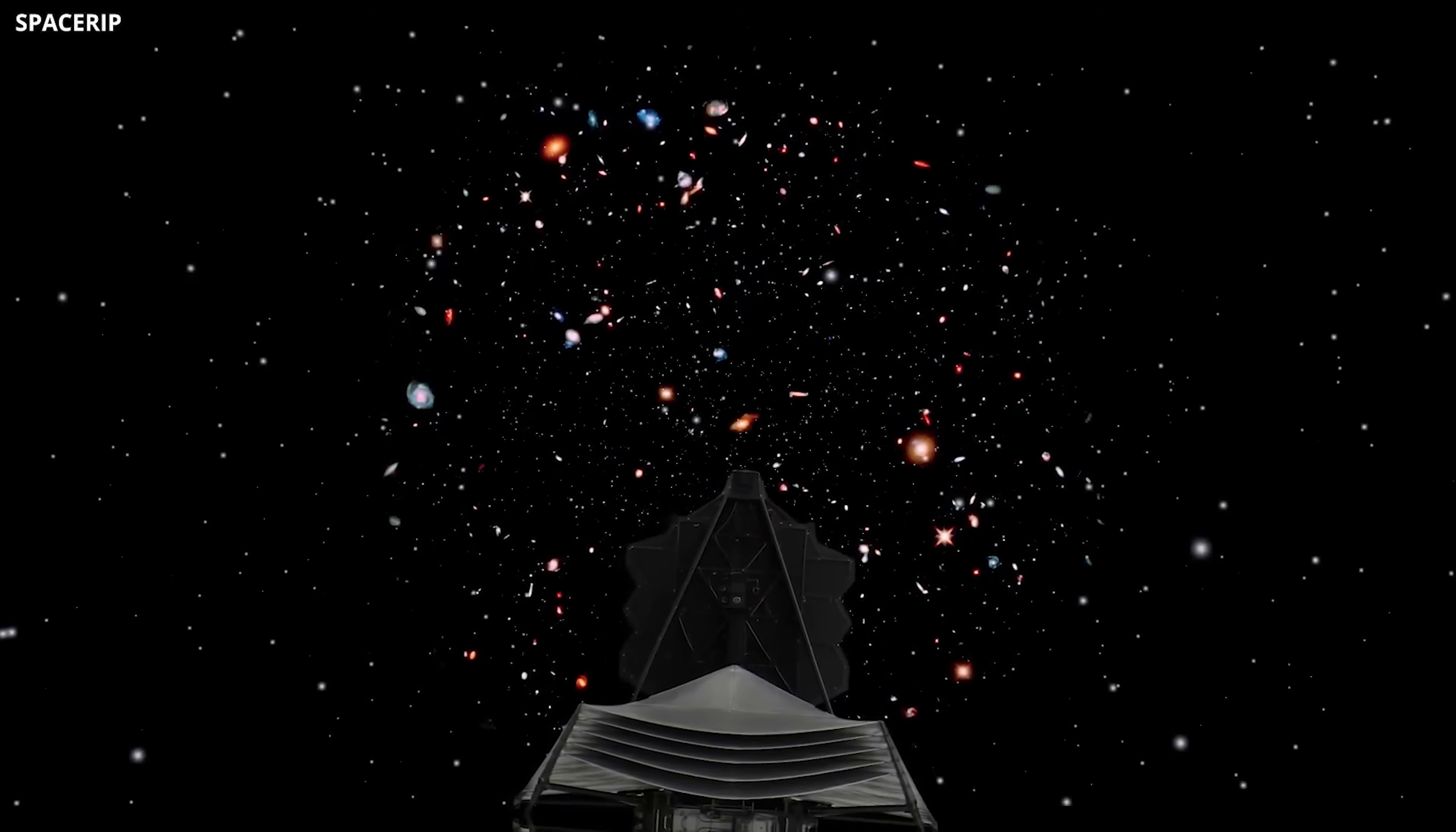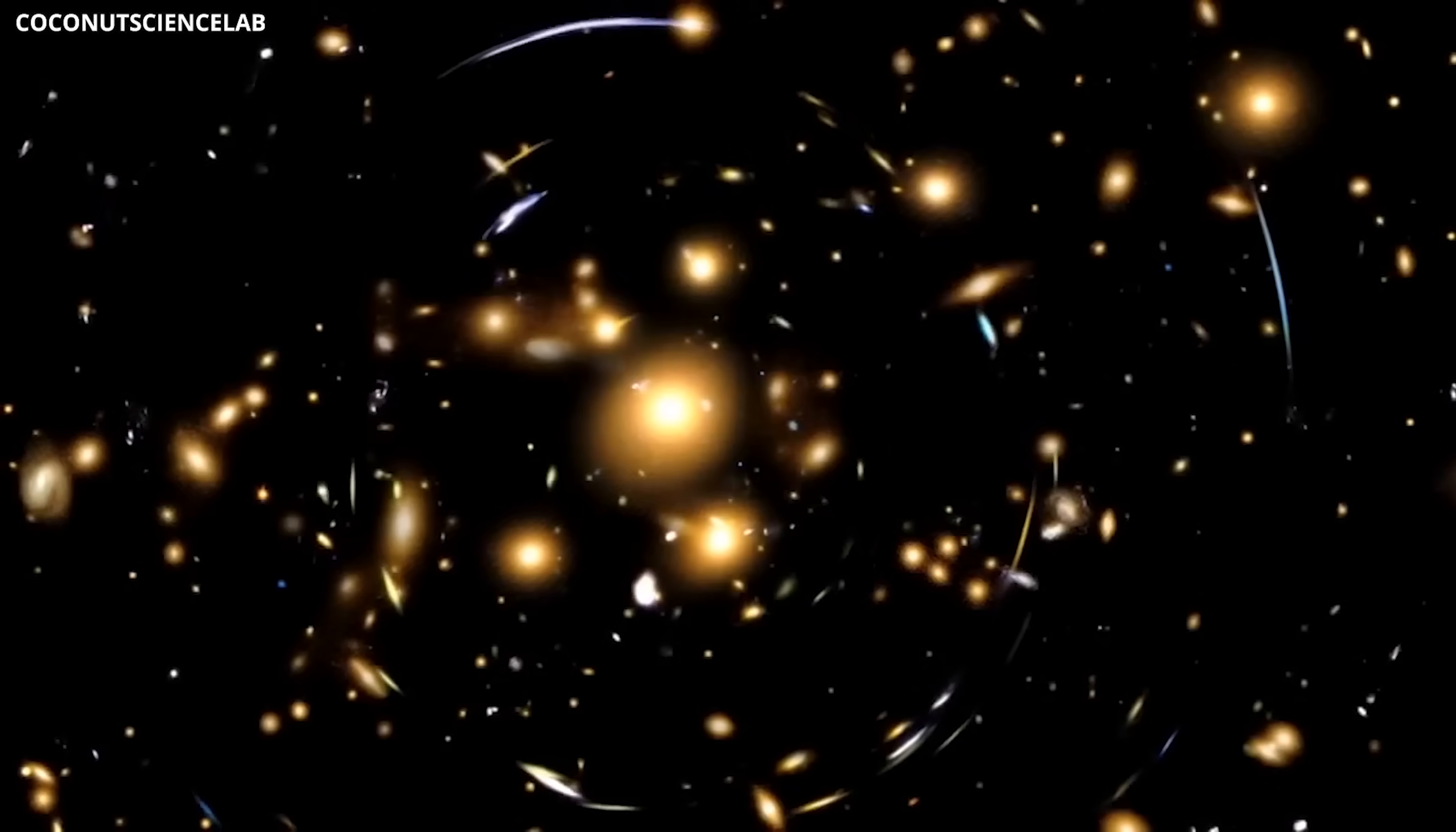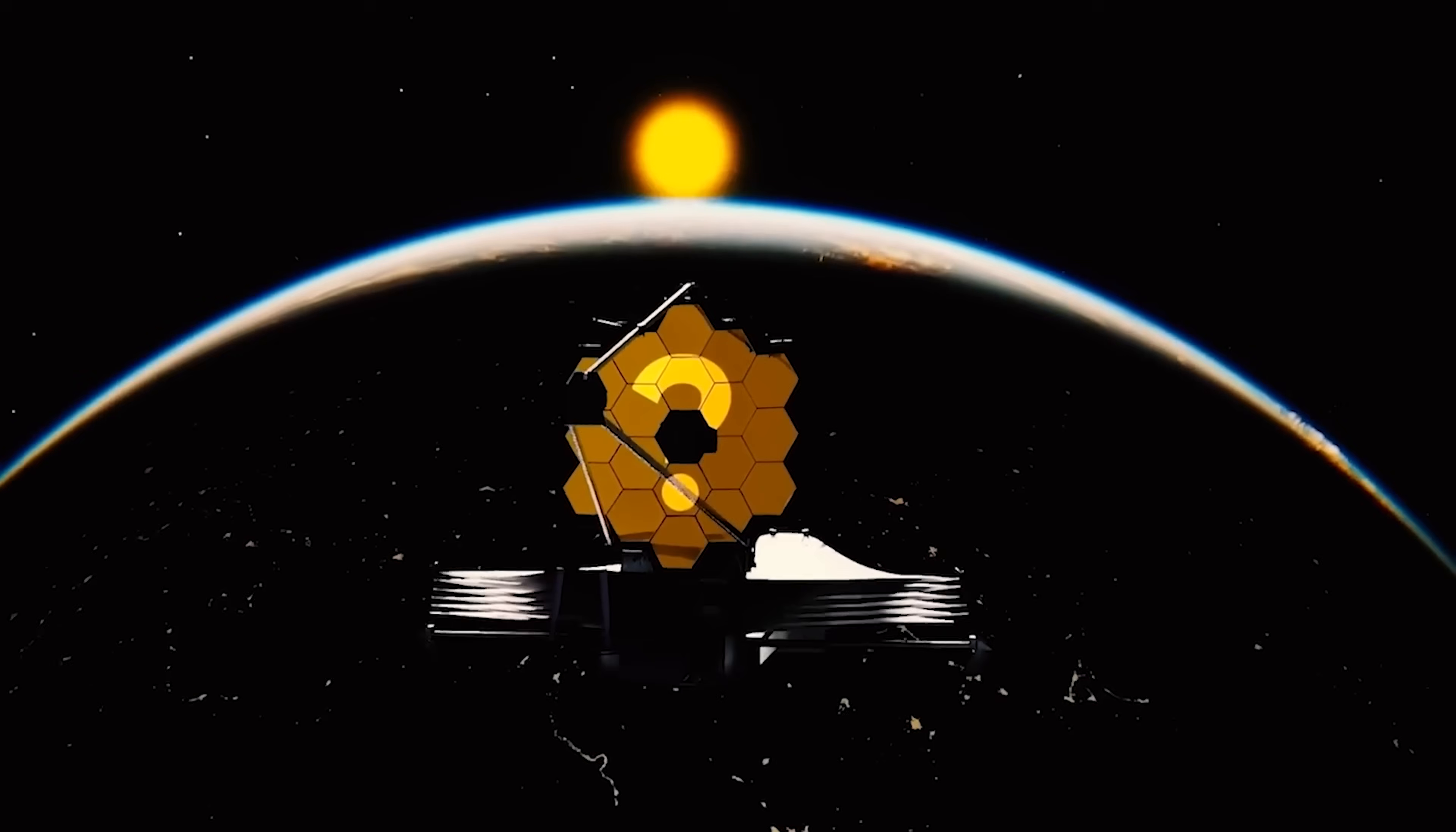But before jumping to conclusions, scientists needed to rule out more grounded possibilities. Were these objects truly galaxies? Could they be unusually bright star clusters? Could gravitational lensing, light being magnified by unseen foreground mass, be amplifying their brightness? Webb's follow-up observations began addressing those doubts.